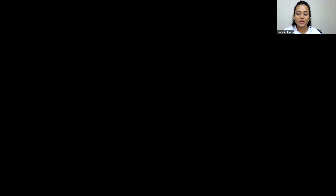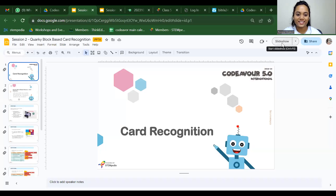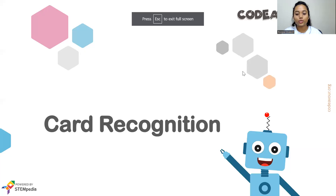Let me share my screen. All the important links such as how to register and website details will be given in the description box. The previous sessions will also be given in the description box — you can check and access those links. So the topic for today's session is card recognition. Basically, when you show a card like right hand, left hand, and things like that, the robot follows the same. That is the activity, so let's begin.